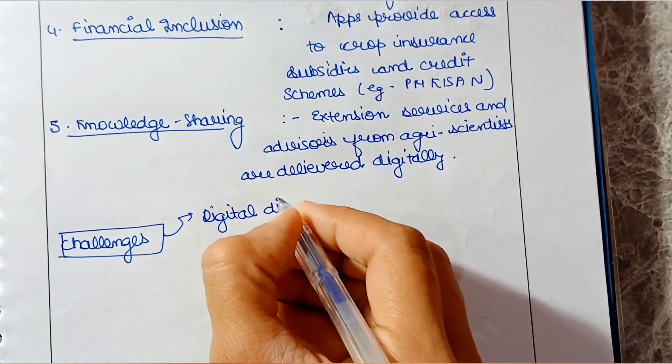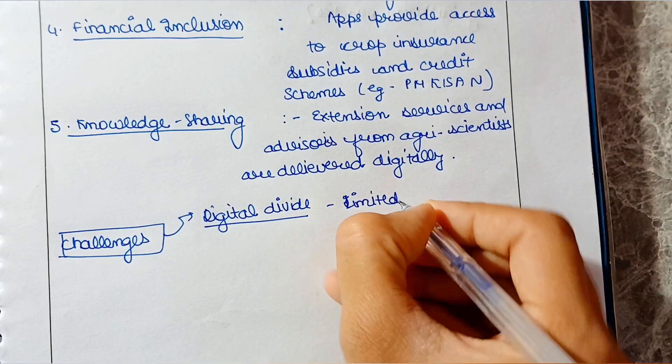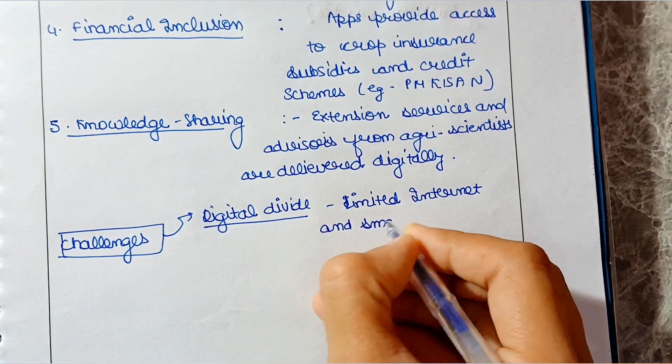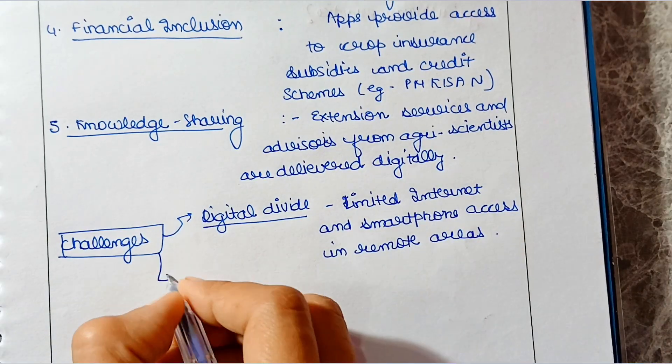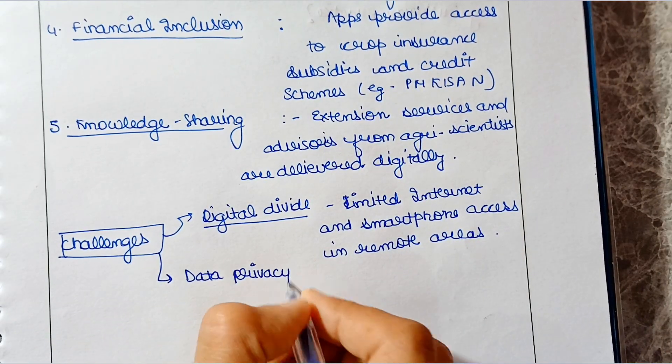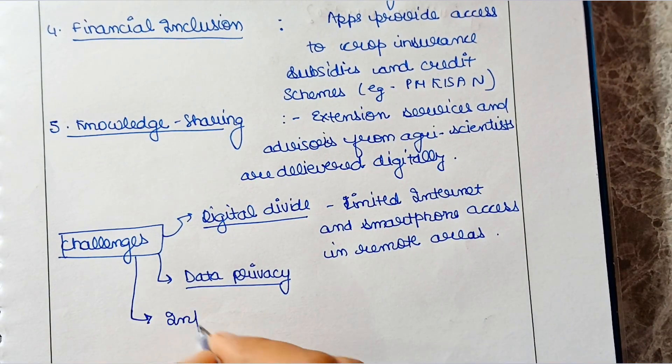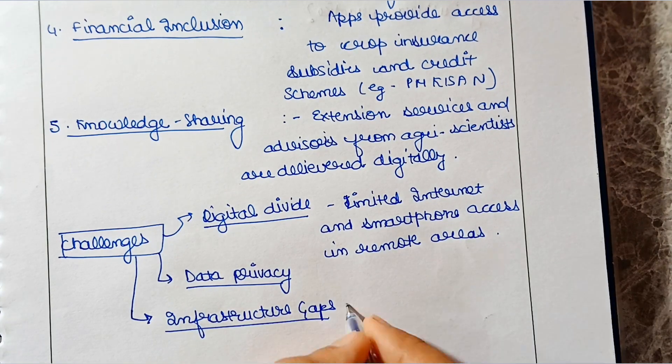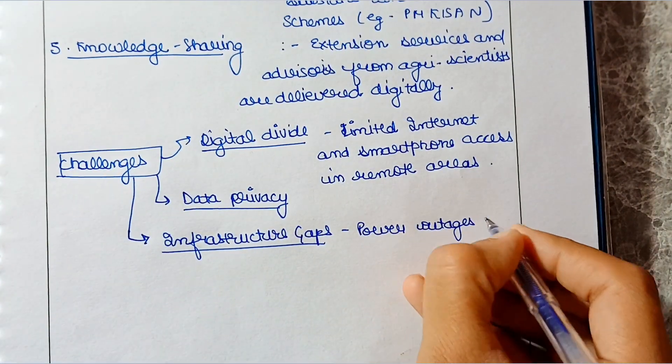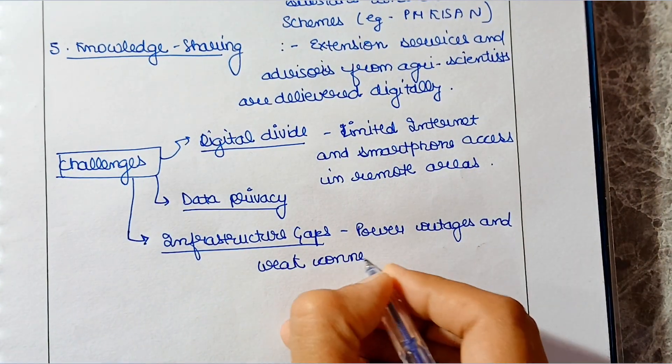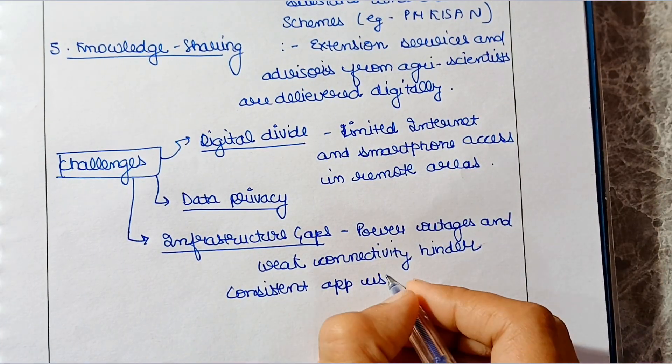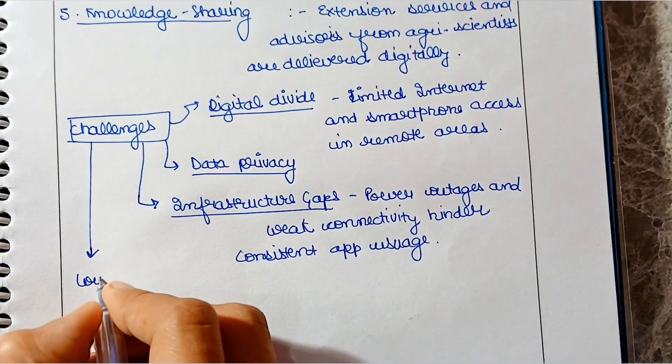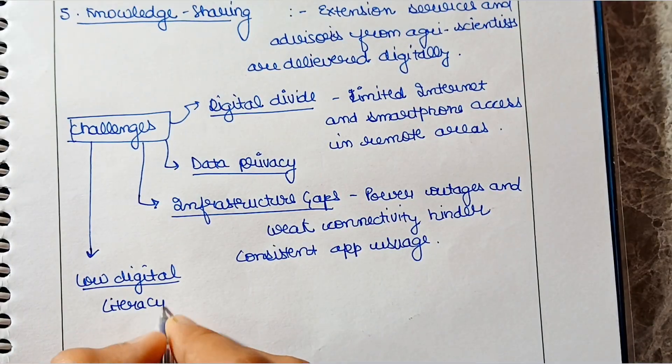Challenges, let's talk about challenges. In short, we will explain these challenges. That is, digital divide: limited internet and smartphone access in remote areas. Next is data privacy. After that is infrastructure gaps. Power outages and weak connectivity hinder consistent app usage. Next is low digital literacy.